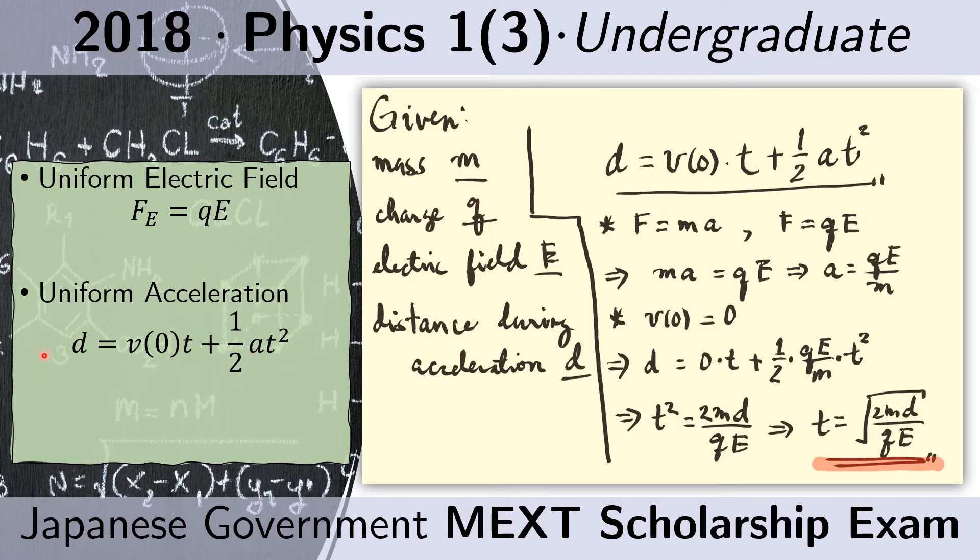So first let's find the, so D is given to be D. V of 0 is given to be 0 because it is initially at rest. And we are looking for T. So now we just have to look for the acceleration.